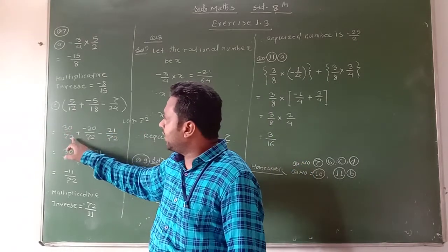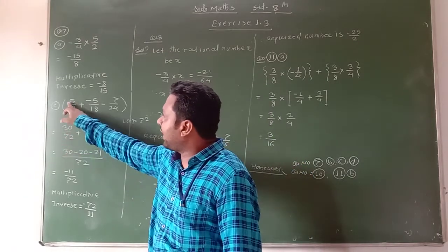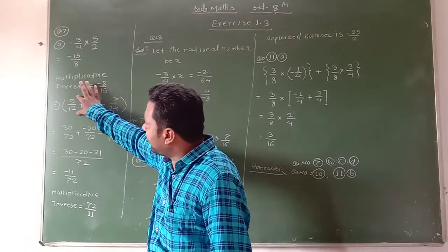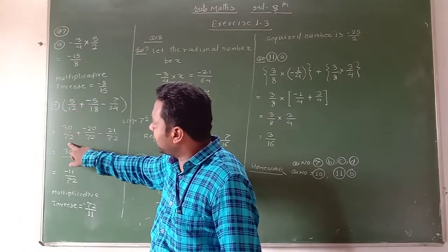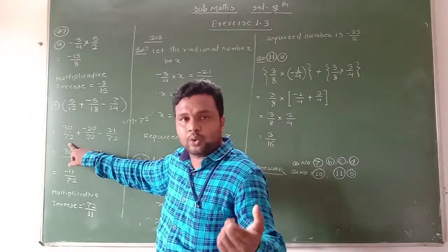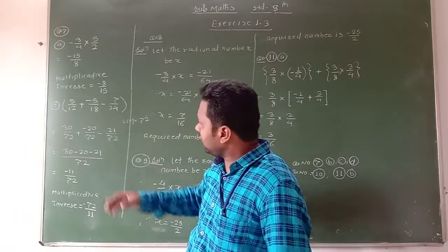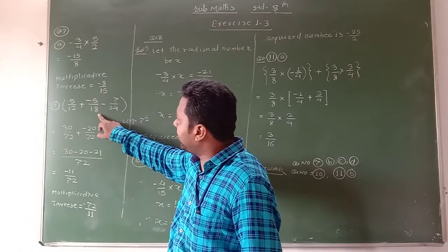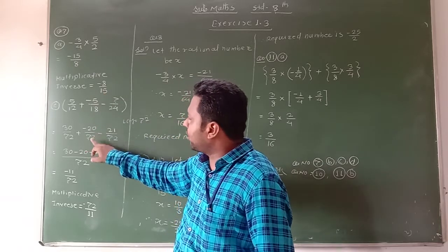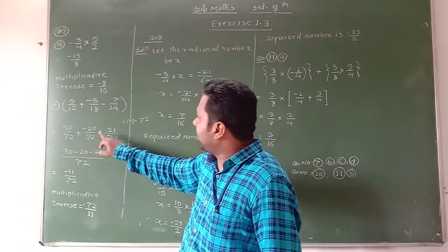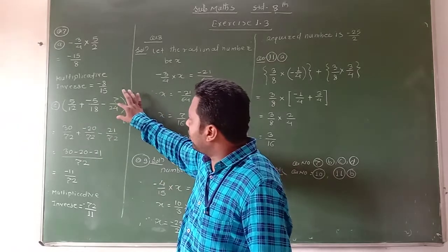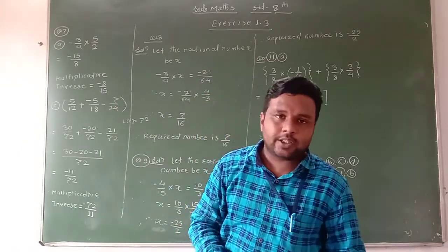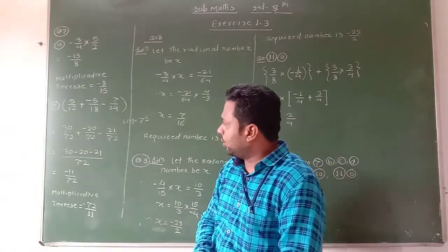Here we make the denominator 72. Now, 72 divided by 12 is 6, so pi upon 12 becomes 6pi upon 72 — we write it as 30 upon 72. Similarly, minus 5 upon 18 becomes minus 20 upon 72. And minus 7 upon 24 becomes minus 21 upon 72. In this way, we make the denominators equal, that is 72.